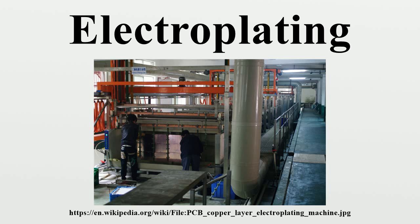The electrolyte contains one or more dissolved metal salts as well as other ions that permit the flow of electricity. A power supply supplies a direct current to the anode, oxidizing the metal atoms that it comprises and allowing them to dissolve in the solution. At the cathode, the dissolved metal ions in the electrolyte solution are reduced at the interface between the solution and the cathode, such that they plate out onto the cathode.